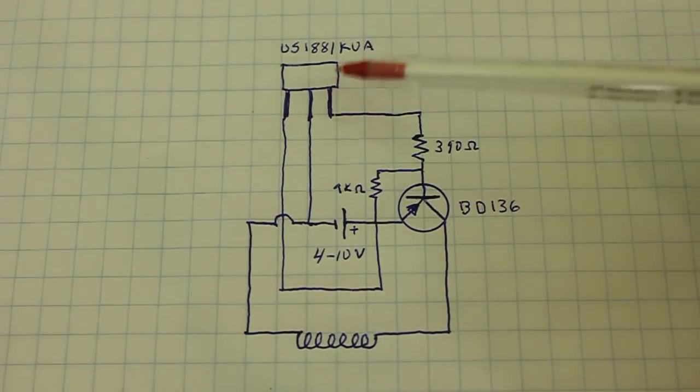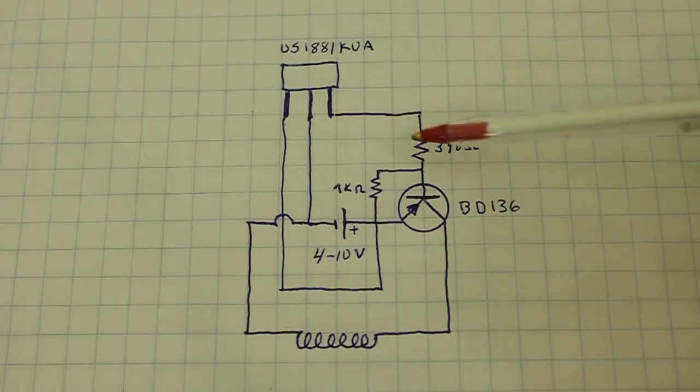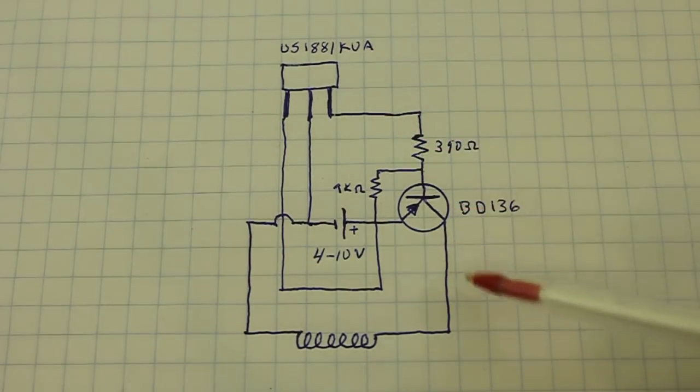When the south pole is away, the signal disappears and the current no longer flows through the coil.